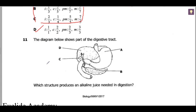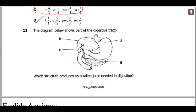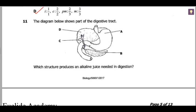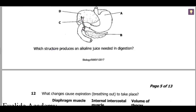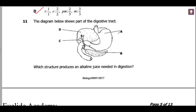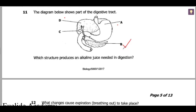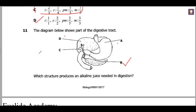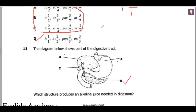Question 11: the diagram shows part of the digestive tract including the liver, stomach, and pancreas. Which structure produces an alkaline juice needed in digestion? It's not the gastric juice — it comes from the pancreas, known as pancreatic juice. That's where we'll end for today, and we'll continue doing more questions in the next video.